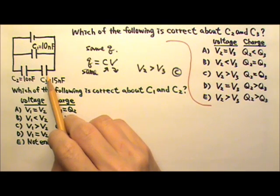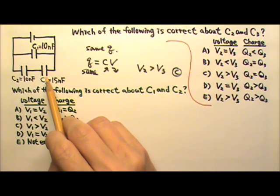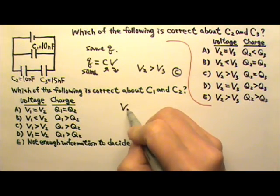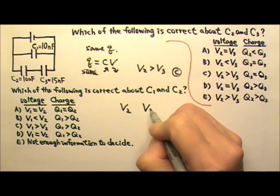But C2 and C3, they are in series. So they have the same charge, but they have to share the voltages. That means they have to share the same amount of voltage C1 gets. So C2 gets less voltage than C1.